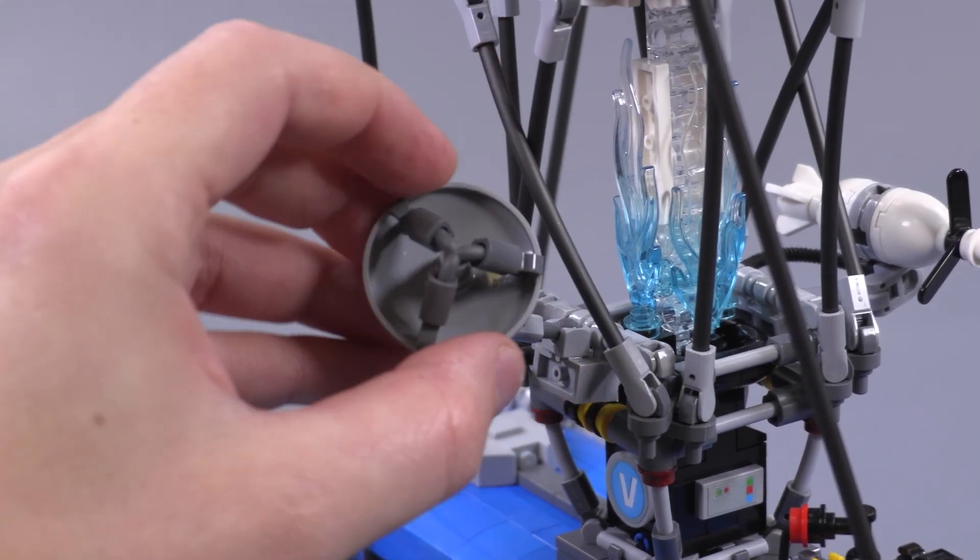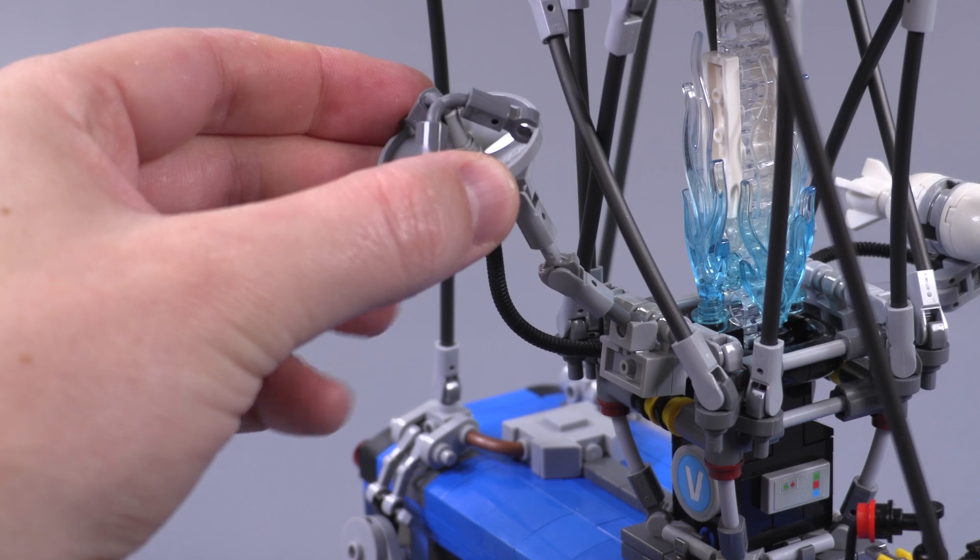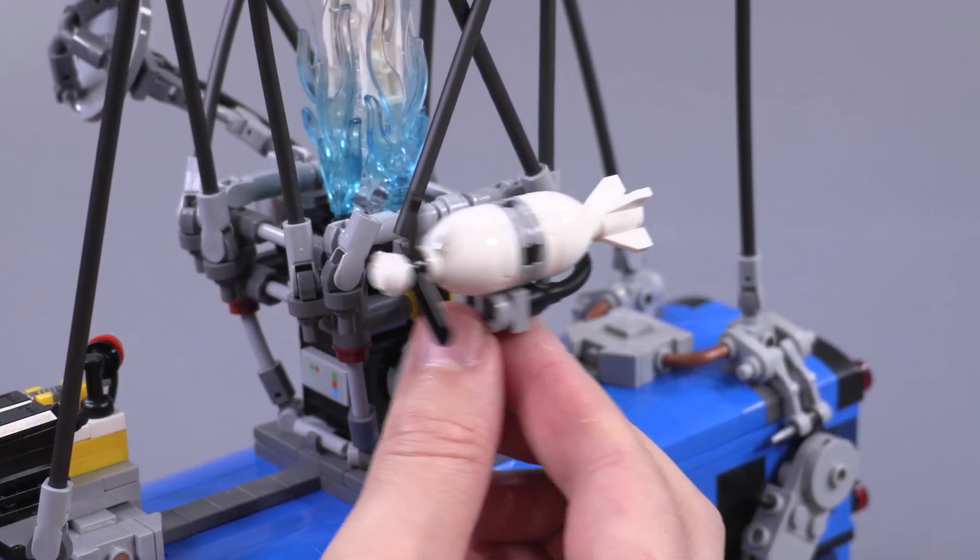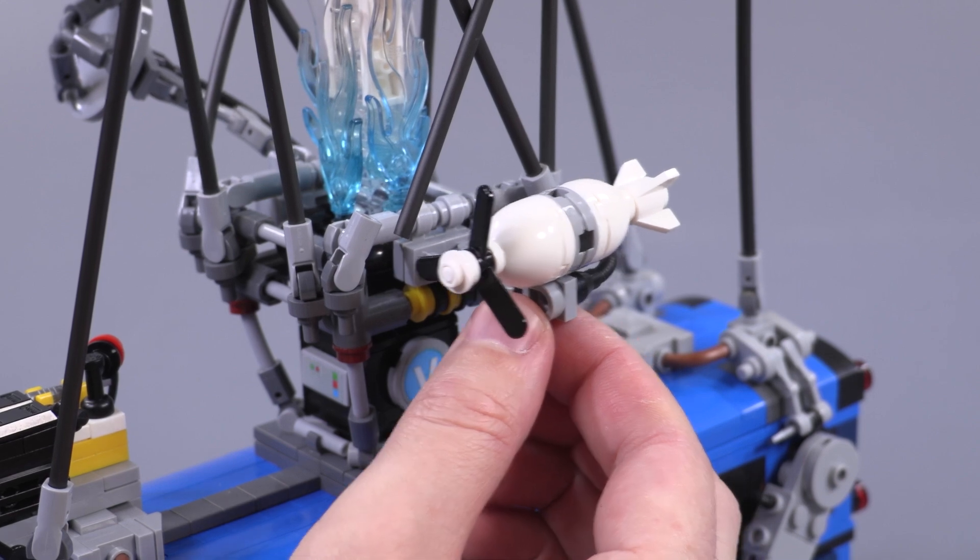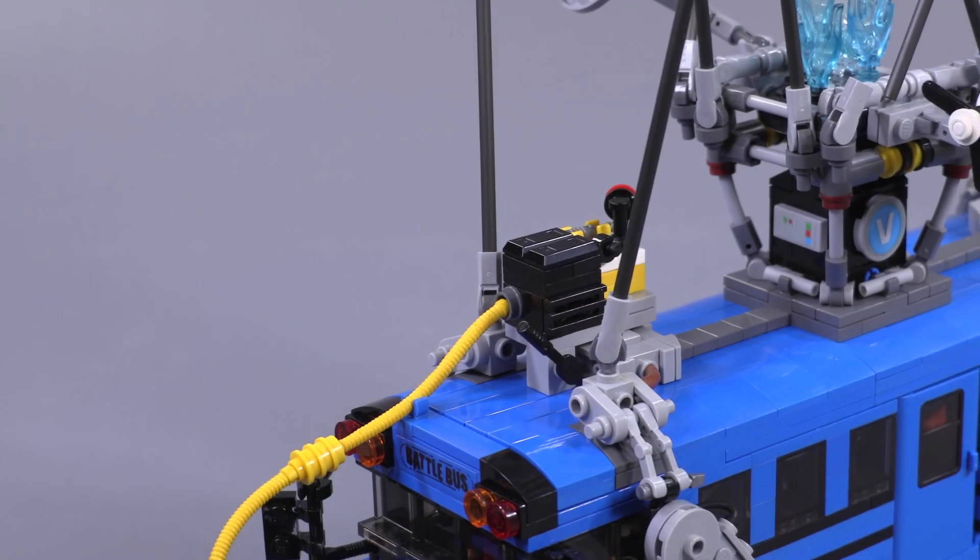Around the blue flames we have a satellite dish on one side with a high level of poseability. Interesting little build technique with the grappling hook or anchor piece in the center there for the trifecta of clips that come out. On the other side we have that little weather blimp balloon that has a propeller that actually spins around if you flick it.